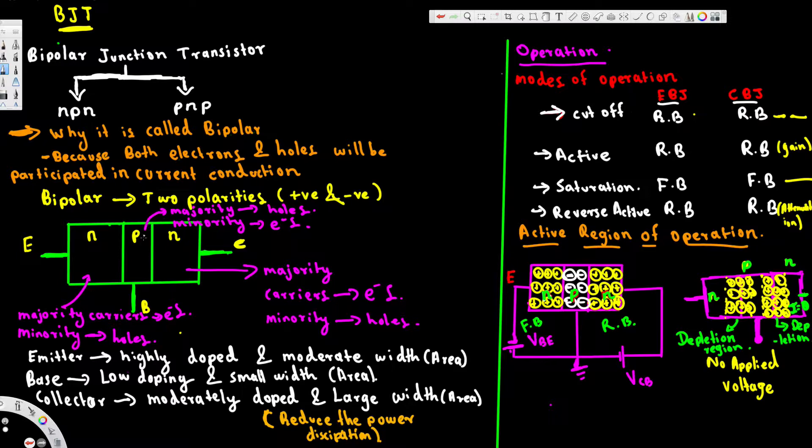The middle part is called the base. The base has low doping and small width. The last part is called the collector. The collector is moderately doped and has large width to reduce power dissipation.